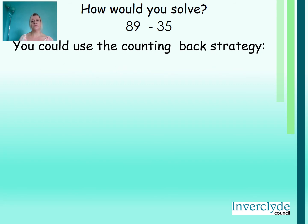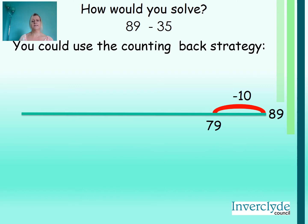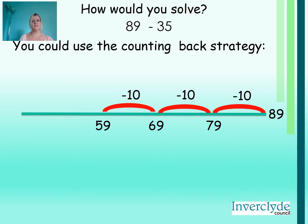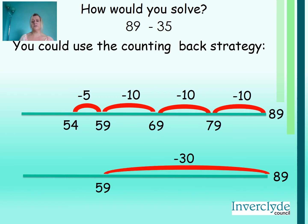You could have used the counting back strategy. 89 take away 10 is 79, take away another 10 is 69, and another 10 for 59. We've taken away 30 so far and we've just got five more to take away, which brings us down to 54. We could have started with 89 and jumped back 30 and then another 5, and it would also bring us to the answer 54.